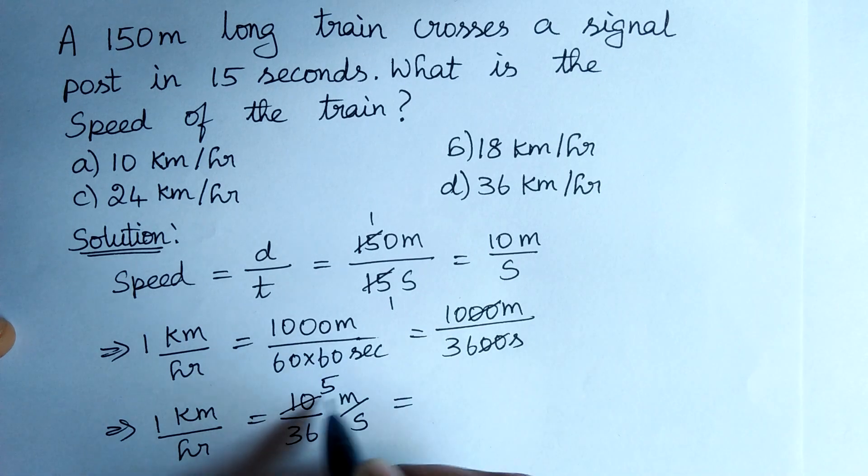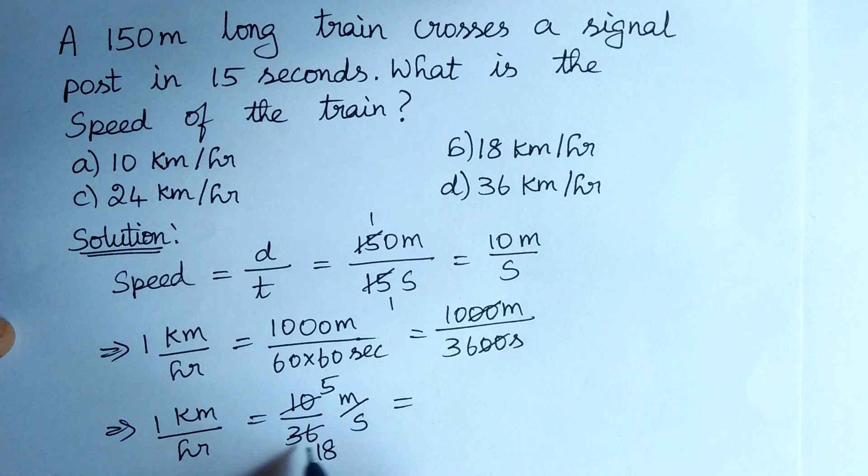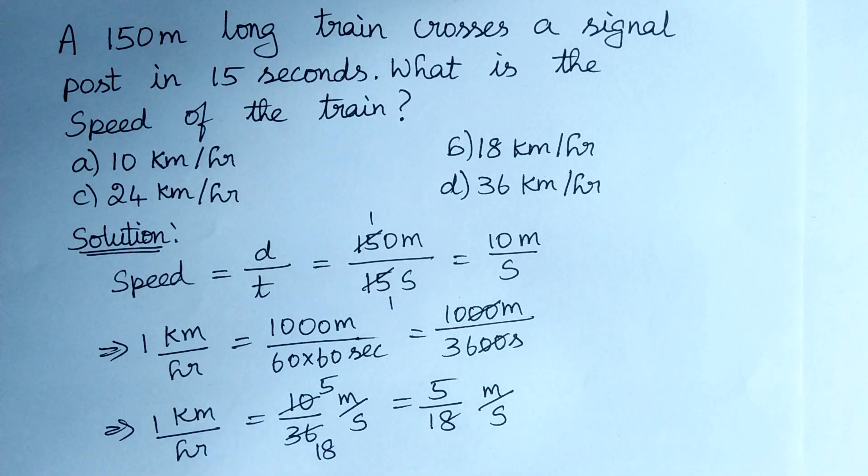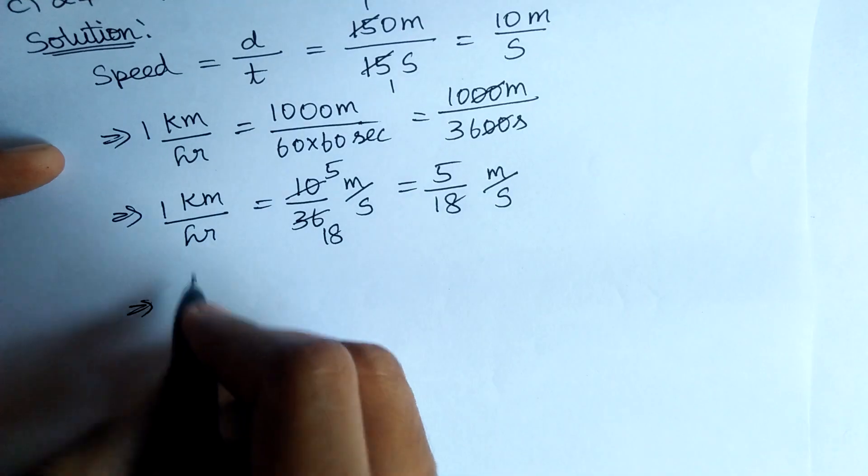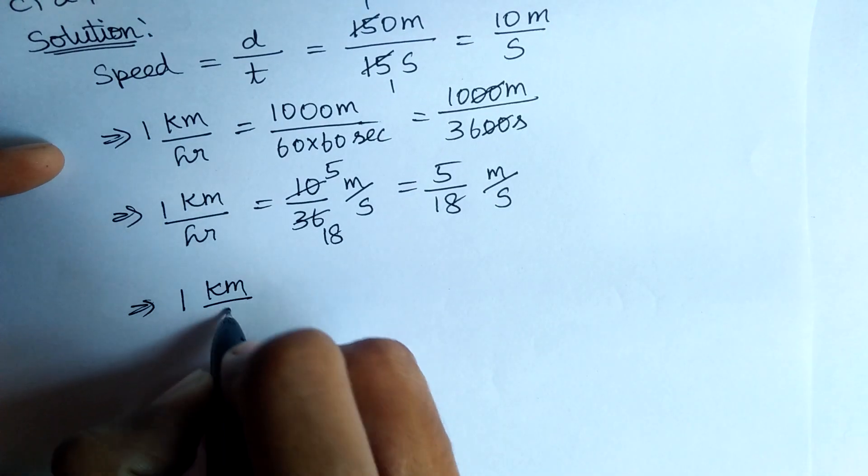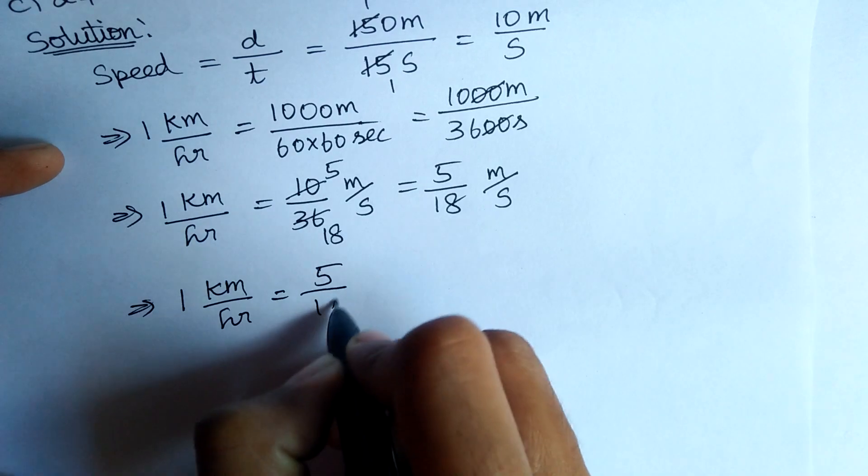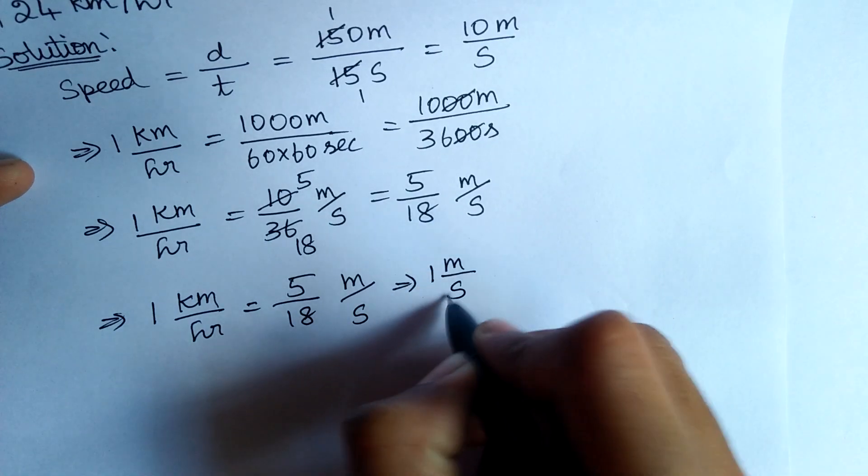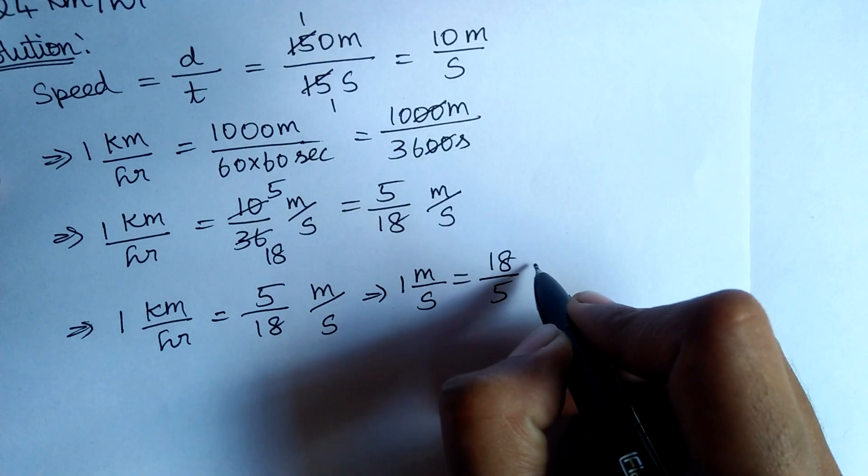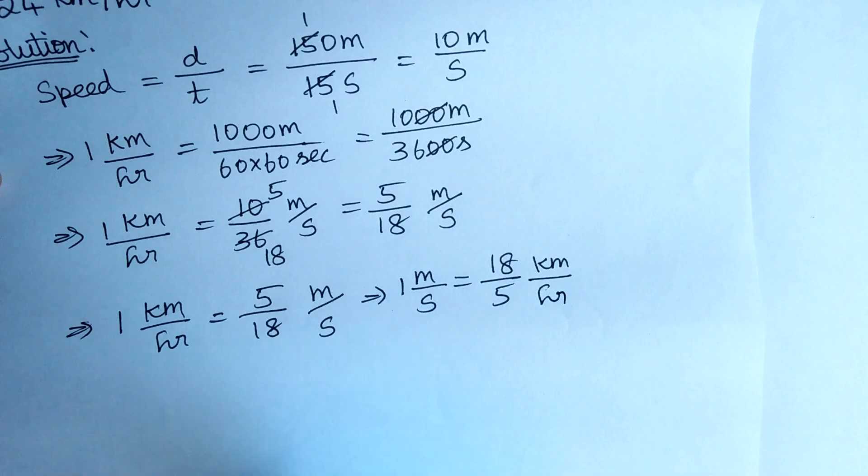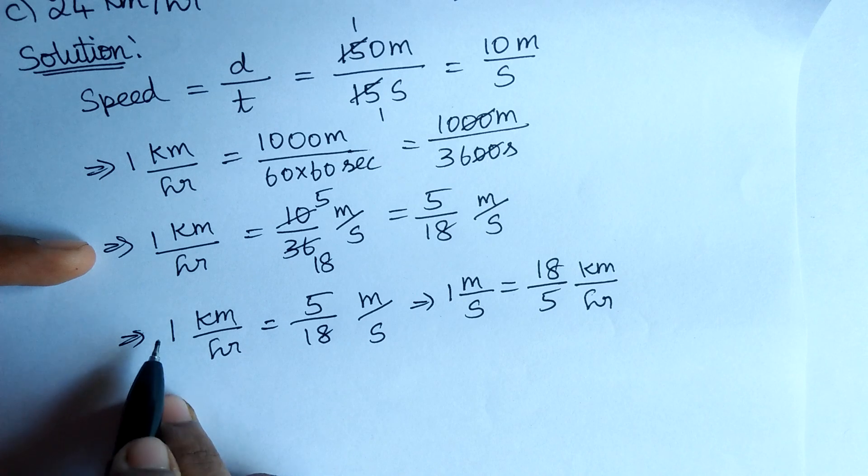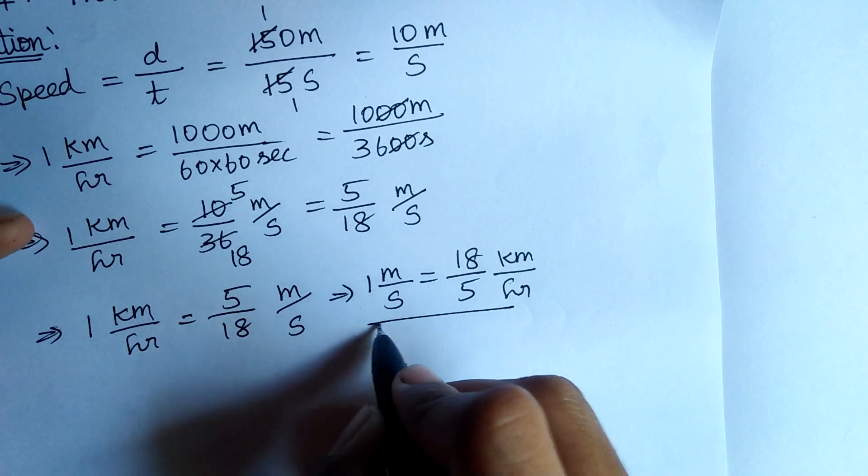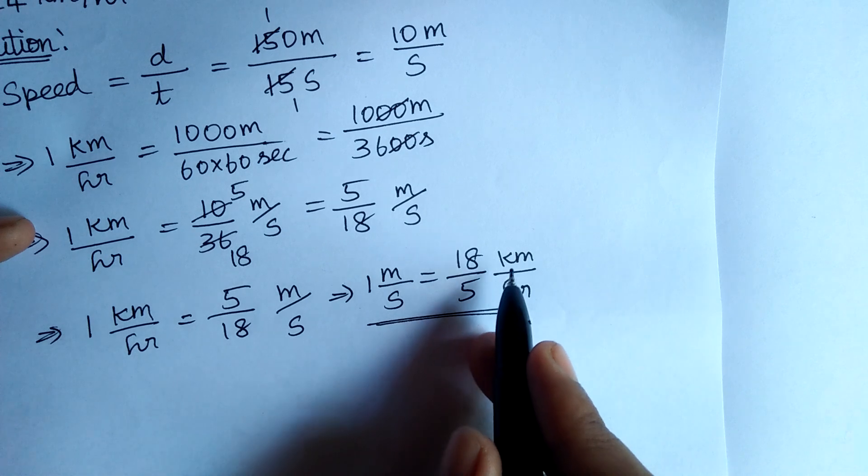Simplifying it, we get 5 to 10, 18 to 36. Therefore, 5 by 18 meters per second. Now, 1 km per hour is equal to 5 by 18 meter per second. Therefore, 1 meter per second is equal to 18 by 5 kilometer per hour. We need to multiply and divide by 18 by 5 to get 1 meter per second. Therefore, we got 1 meter per second is equal to 18 by 5 kilometer per hour.